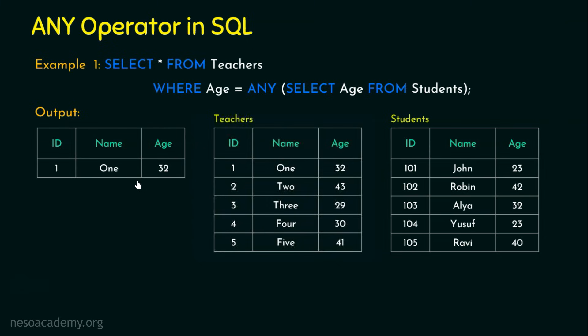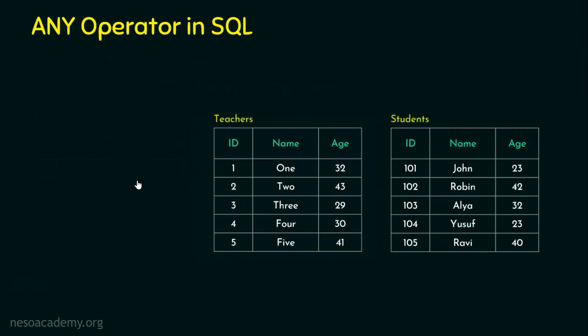You may wonder how a teacher and student can have the same age. Let's assume this university offers a work-integrated learning program — courses for people working in the industry — and a recently graduated teacher may have just joined. That explains the overlap.